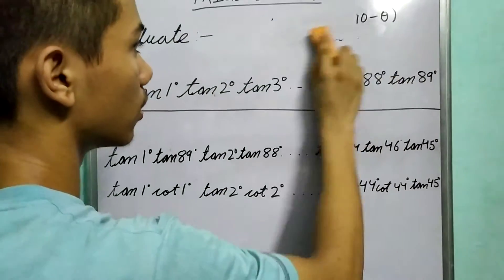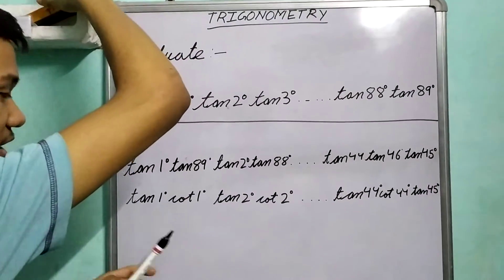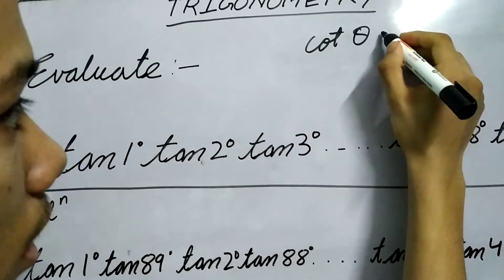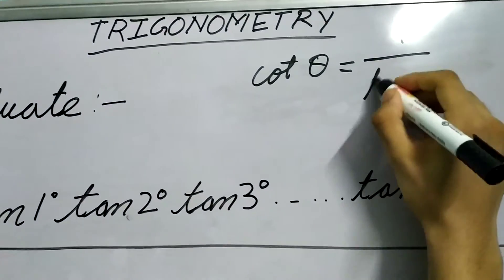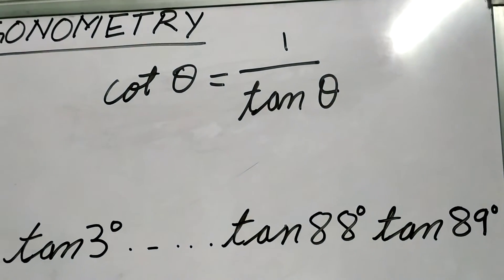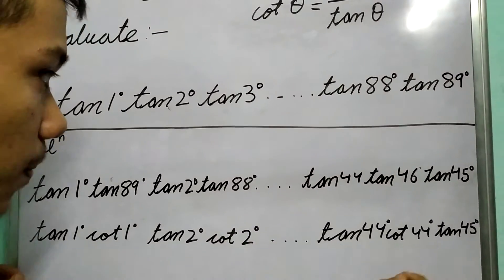Which turns out to be very useful in such types of questions. See, we know that cot θ is 1 upon tan θ, right? We know this relationship.